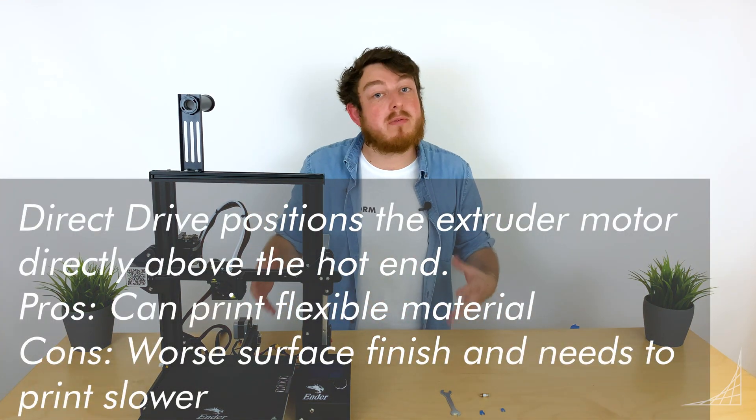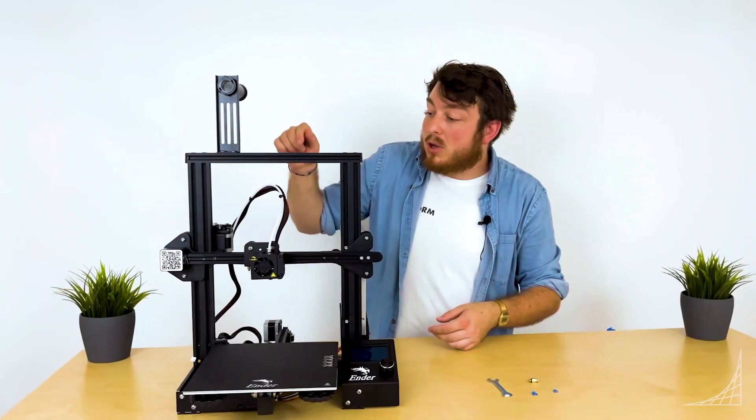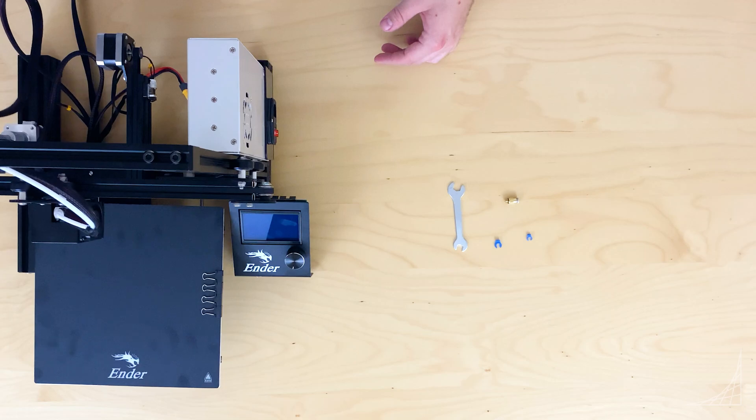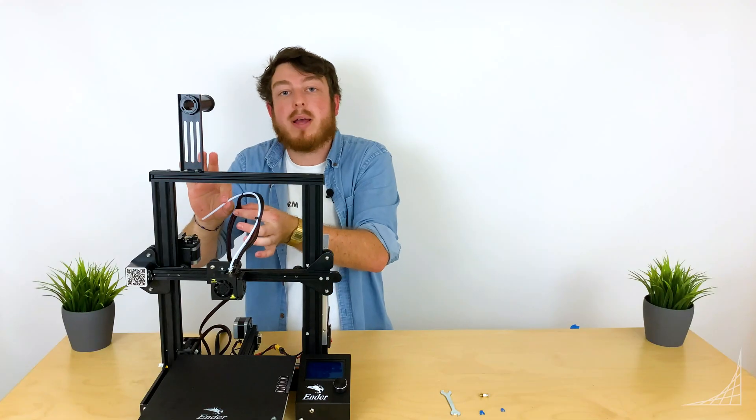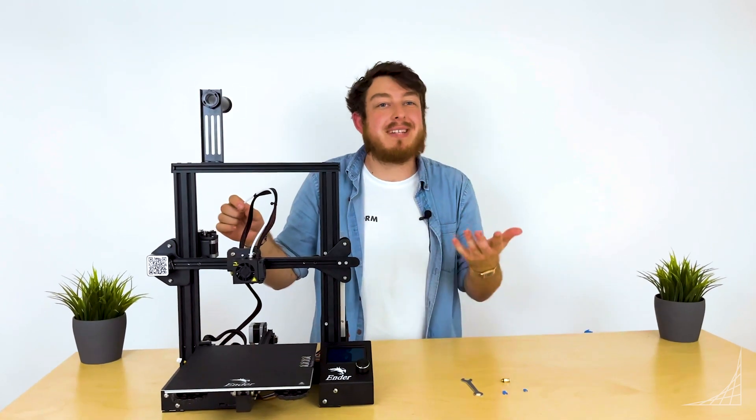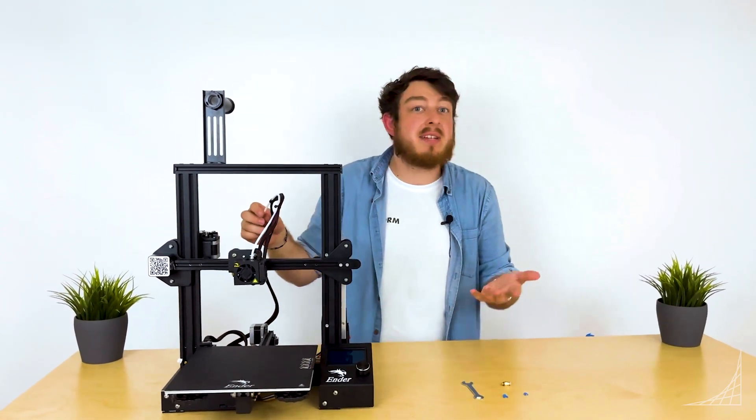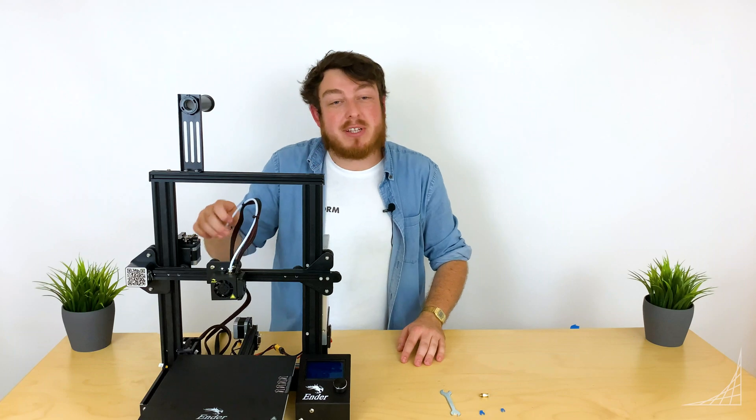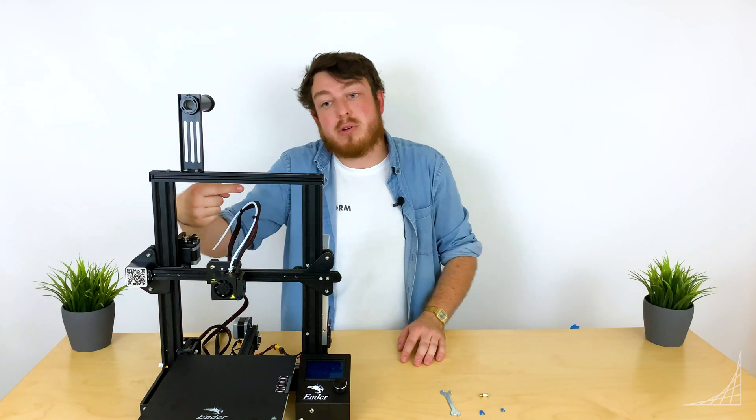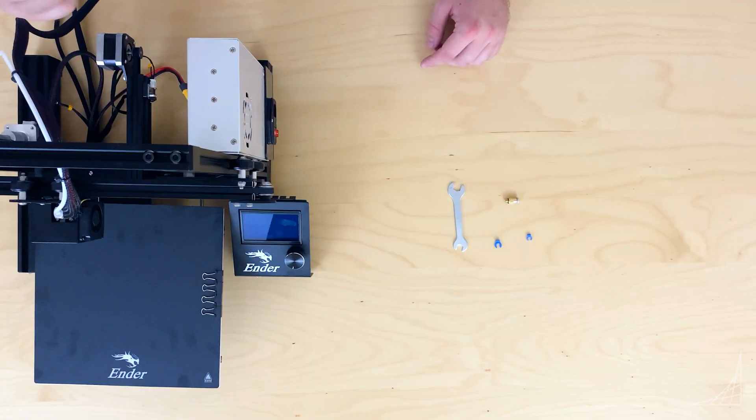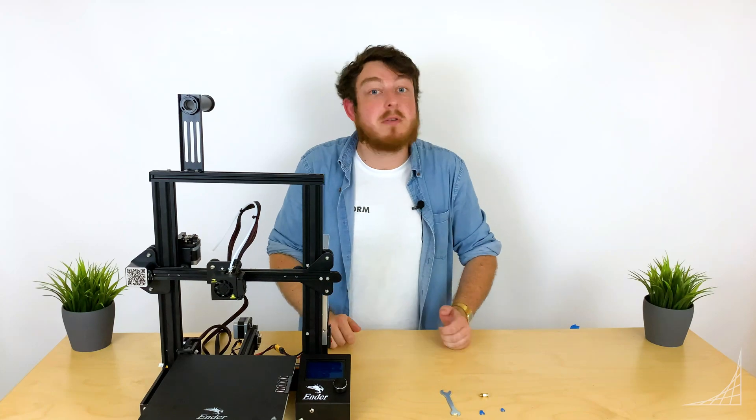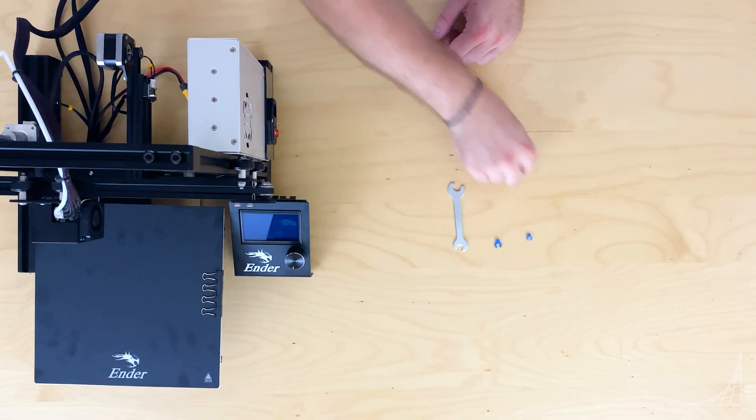The big difference is whether or not you're using this little white tube that is attached to a wire loom. This tube is called a PTFE tube, it's also known as Teflon (that's the business name), and it's really just a low friction plastic. When your extruder is pushing your filament through, it needs very little resistance as it then goes into the hot end where it can be melted and then squirted out to make your model.